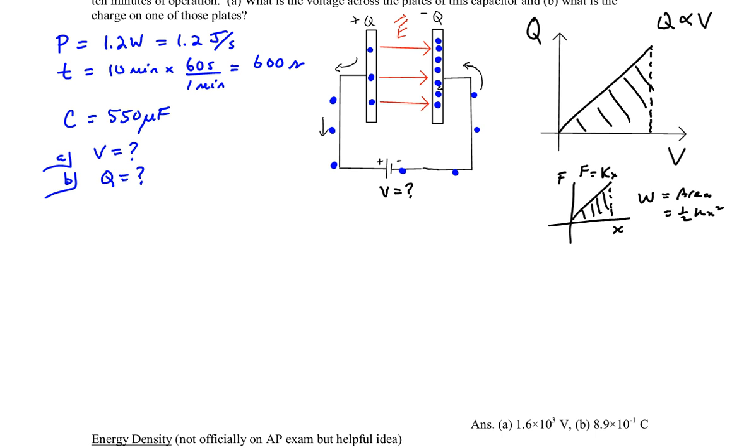Essentially, the stored potential energy in a capacitor is equal to one half times the charge on either plate multiplied by the voltage.